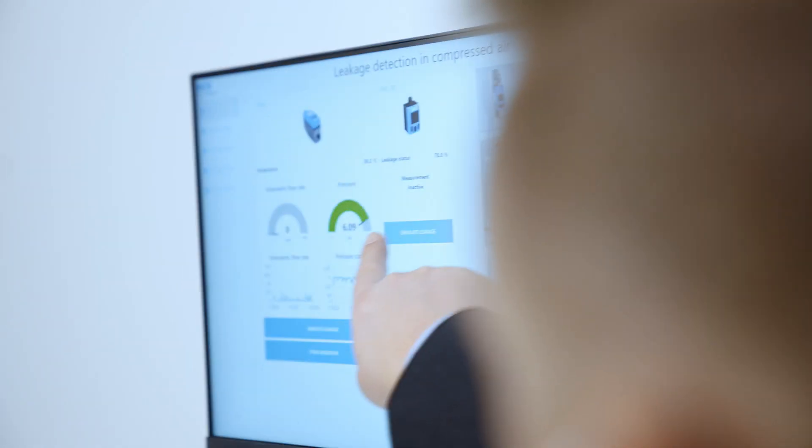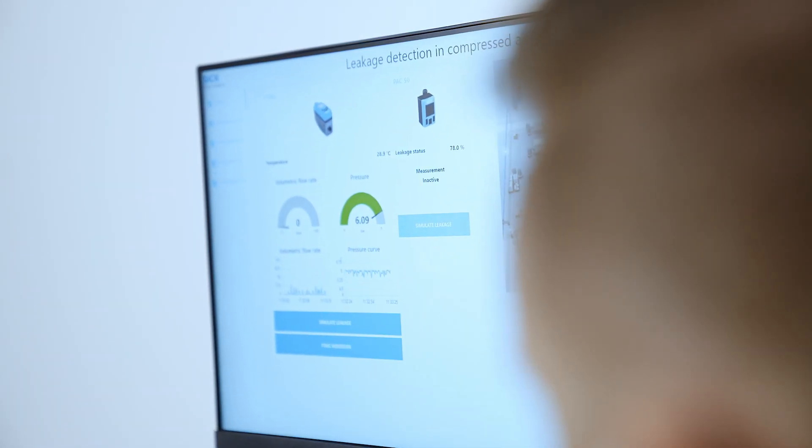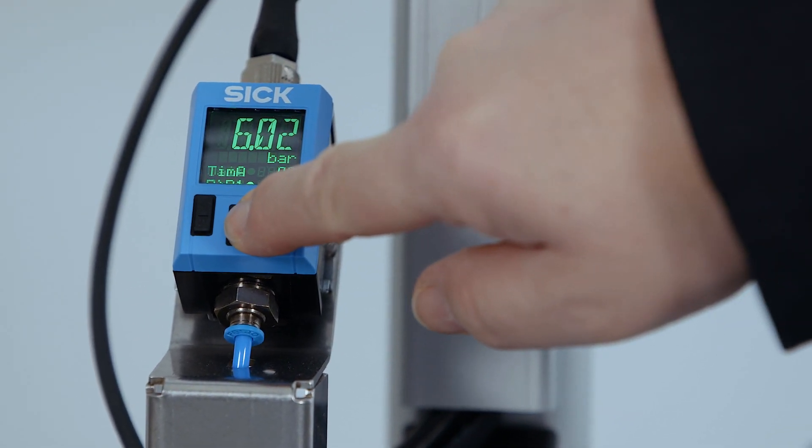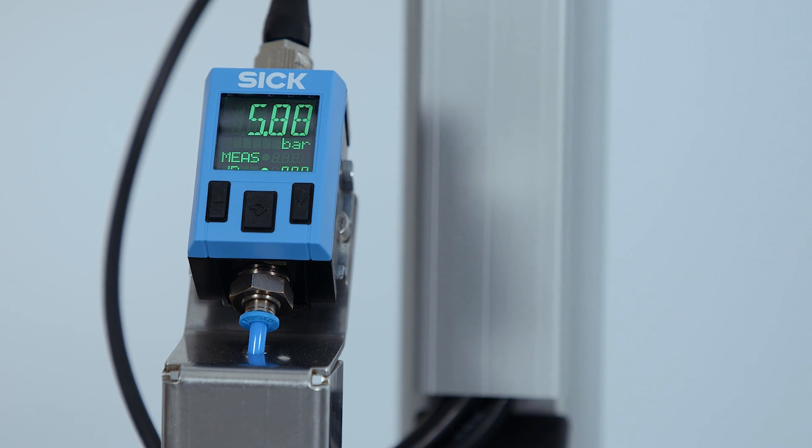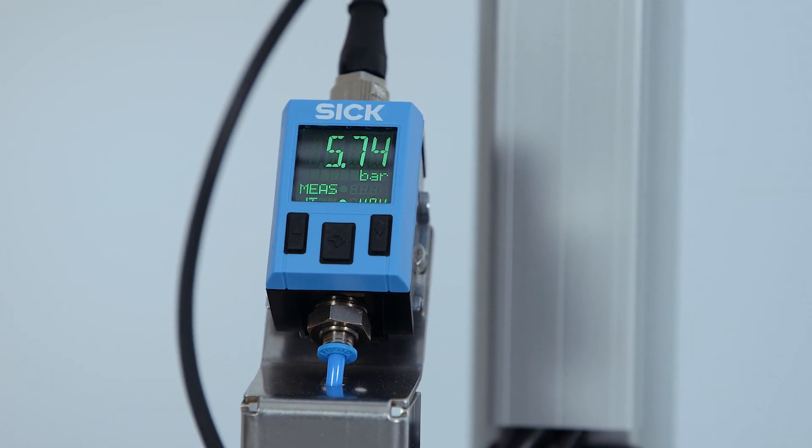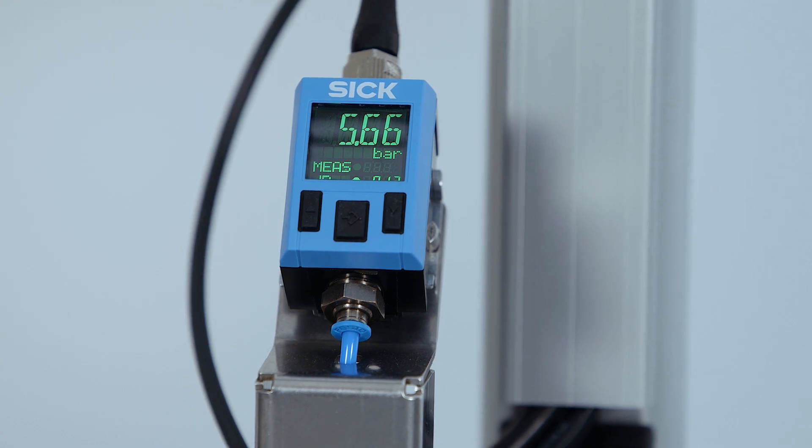However, the leakage test can also be started via the push button on the touch screen or by pushing the center button on the sensor. The preset time expires and the sensor checks the pressure drop and if the preset pressure switching thresholds are reached.